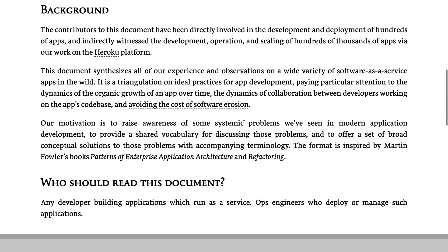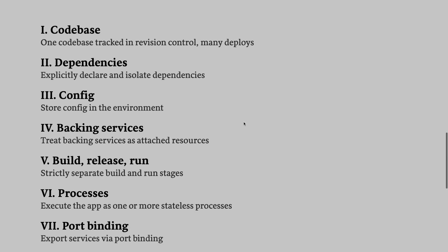We will talk about deployment and all these things. Let's look at these 12 Factor principles. First, a codebase should be tracked through version control — Git. You might be using Git Flow, GitHub Actions, or CI pipelines, but version control like Git is essential. You can be using Bitbucket, GitLab, or GitHub, but the version control system is still Git.